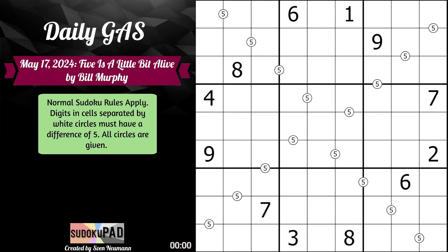Normal Sudoku rules apply. Digits in cells separated by white circles must have a difference of five. All circles are given.